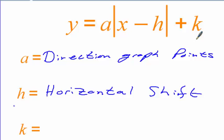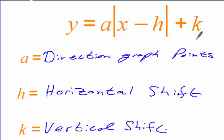So if you have x minus 3 inside the absolute value function, your H is positive 3, which shifts the graph to the right three places. H is connected to x, so it shifts on the x-axis. K is the vertical shift. The sign on K never changes — if K is positive, it's a shift up; if K is negative, it's a shift down.